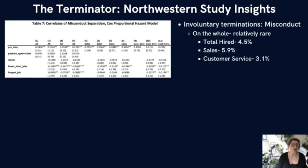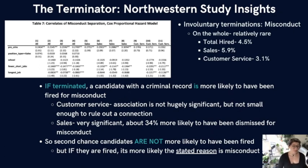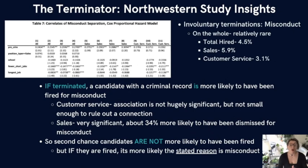When we look at those with criminal records who have been dismissed, the report finds that if a candidate has a criminal record, it is more likely they were fired for misconduct compared to a co-worker with no criminal history. These associations vary by job position. Customer service has only a slight correlation. But sales representatives are about 34% more likely to have been dismissed for misconduct. So having a criminal record doesn't mean you'll necessarily be fired, but if you are fired, there is a high likelihood it was for reasons related to misconduct — at least in sales positions.